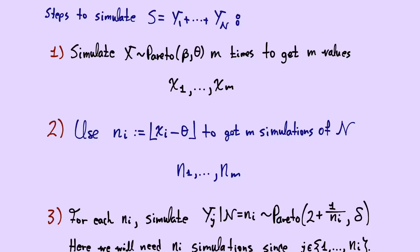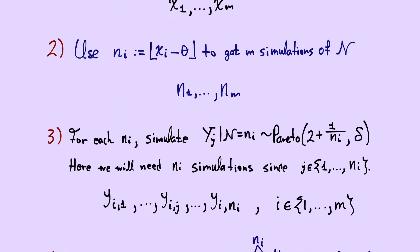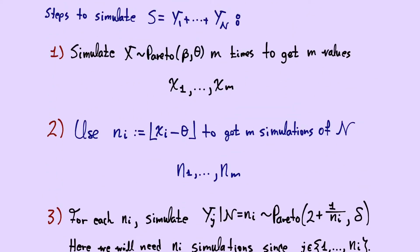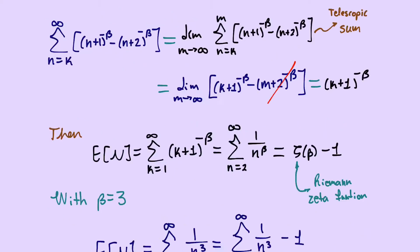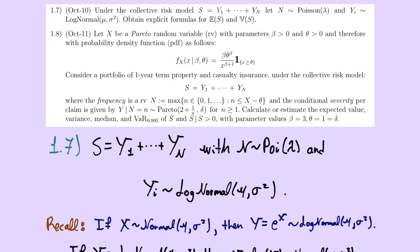Simulation is tricky here because the severity random variables are not independent of the frequency — we must handle the conditional structure carefully. There are essentially four steps. Step 1: simulate the Pareto distribution with parameters β and θ to get m simulated values x₁, x₂, ..., xₘ of the random variable X.